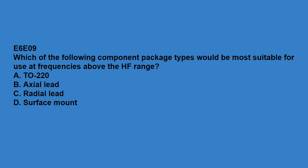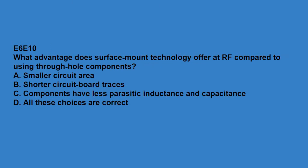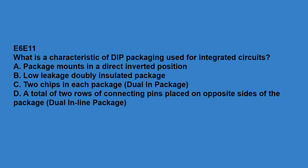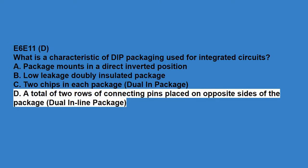E6E09: which of the following component package types would be suitable for use at frequencies above the HF range? Surface mount. E6E10: what advantage does surface mount technology offer at RF compared to using through-hole components? All of these choices are correct: smaller circuit area, shorter circuit board traces, and components have less parasitic inductance and capacitance. E6E11: what is a characteristic of DIP packaging used in integrated circuits? A total of two rows of connecting pins placed on opposite sides of the package — dual in-line package.